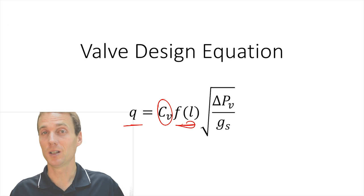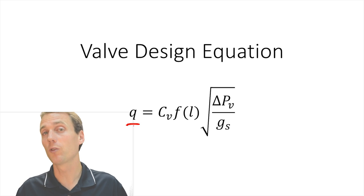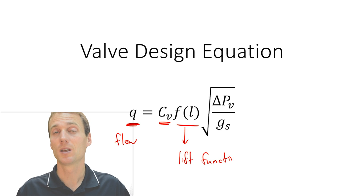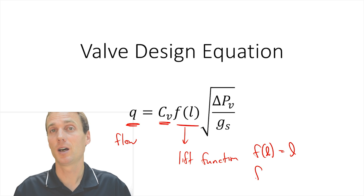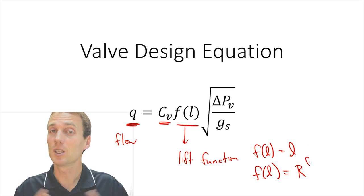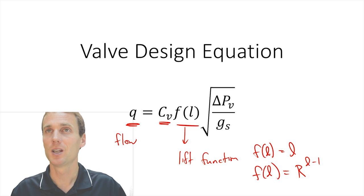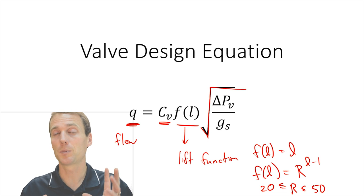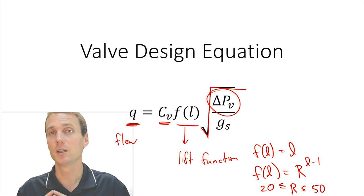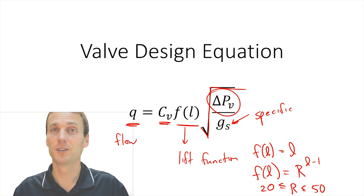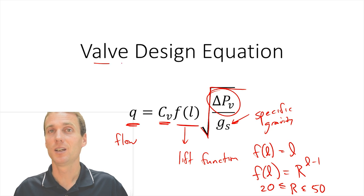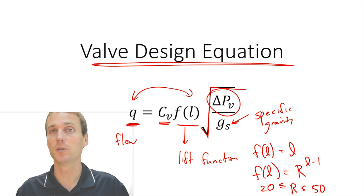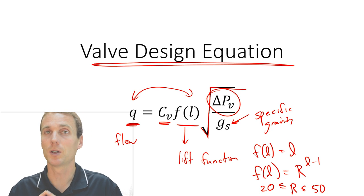Let's go on to the valve design equation. The flow Q is equal to CV times a lift function F(L). If that's a linear valve, F(L) is just lift. We'll also be talking about equal percentage valves, so linear or equal percentage valves. You also have the square root of a ratio: delta PV — the pressure drop across the valve — divided by the specific gravity of the fluid flowing through the valve. This is the valve design equation, and it relates the lift to the flow. If we have constant pressure drop through the valve, then lift and flow are the two variables in the problem.